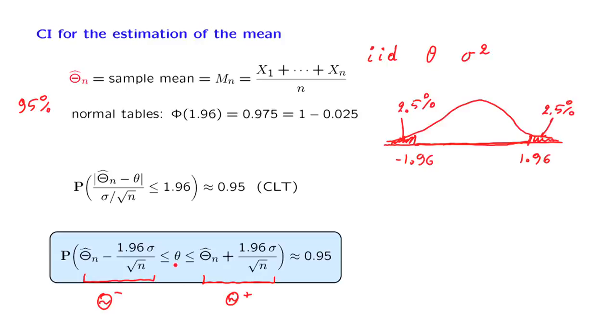If instead we wanted a 90% confidence interval, we would proceed in more or less the same way. Here we would want to have the number 0.95. Why is that? We want this middle interval to have probability 90%, which means that we want to have probability 5% at each one of the tails.